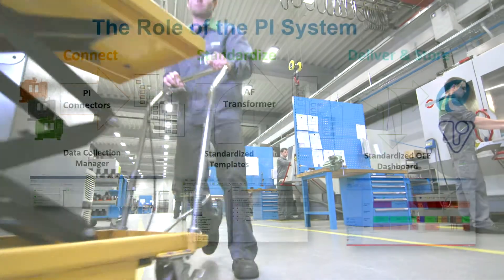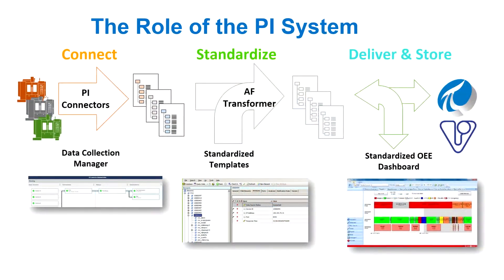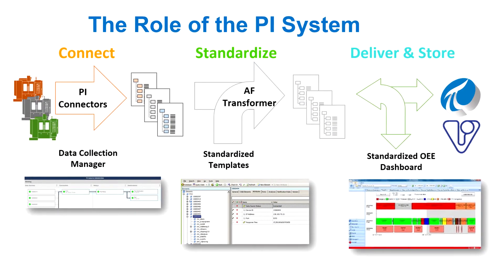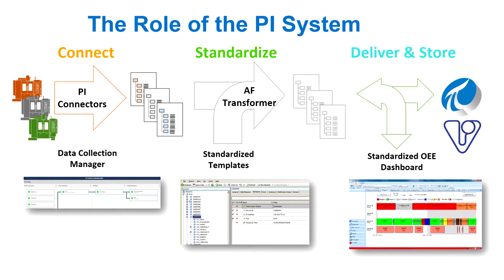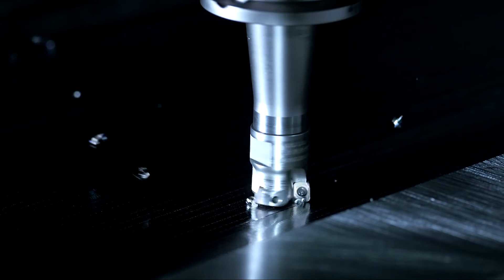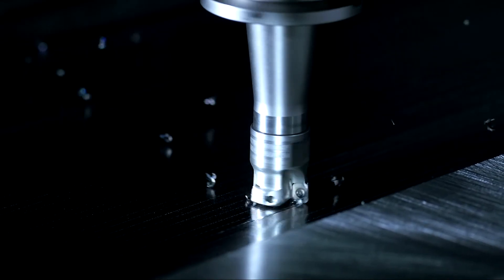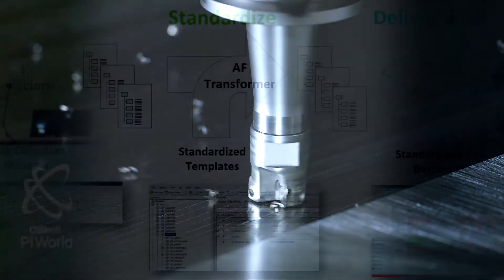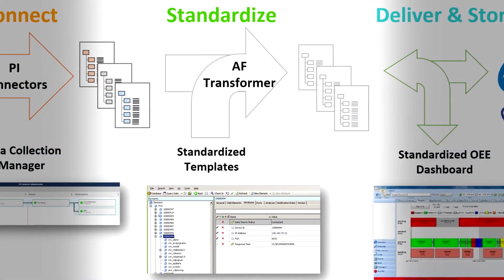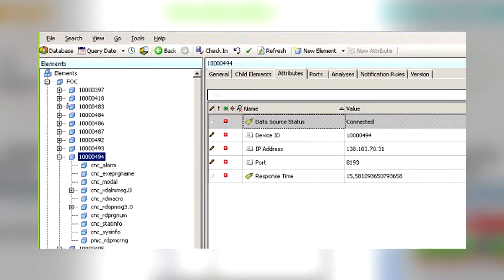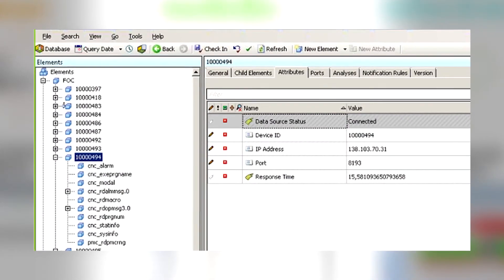From Pi we selected three components. First of all is the connectors, used to get all of the data out from the CNC machines. The second one is we started to use the AF transformer — Connie and his team set up standardized templates so we could use the AF transformer and export it into whatever consuming system we have.